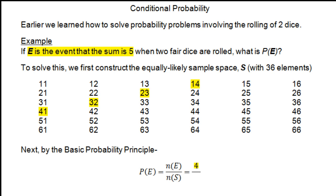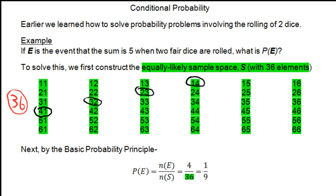To find the numerator — the number of ways E can occur — we look at the equally likely sample space, those 36 possibilities. As we look through all 36, there are exactly 4 where the sum is 5: (4,1), (3,2), (2,3), and (1,4). So the numerator is 4, the denominator is 36, giving a probability of 4/36, which reduces to 1/9.